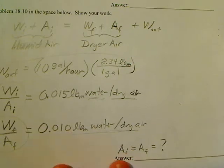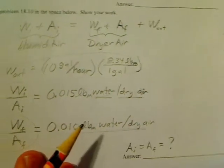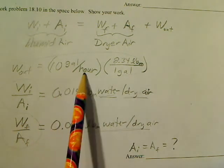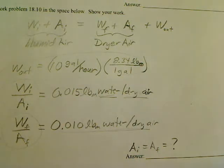In the problem statement they tell you that the amount of water coming out of the air conditioner is 10 gallons per hour and you can use the density of water. Normally we say the density of water is one gram per cubic centimeter. I have given it to you in slightly different units, in English units of 8.34 pound masses per gallon.